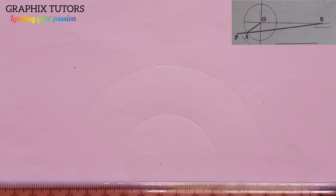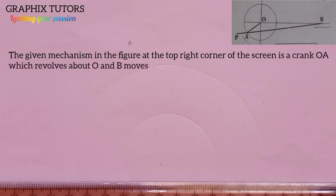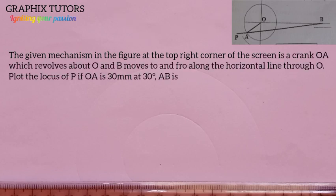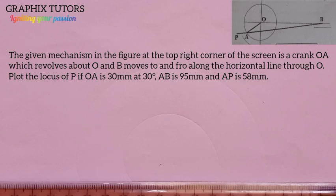Good, everyone. My name is Graphics. The giving mechanism in the figure at the top right corner of the screen is a crank OA that revolves anti-clockwise about O, and B moves to and through along the horizontal line through O. Plot the locus of P if OA is 30mm at 30 degrees, AB is 95mm, and AP is 58mm.